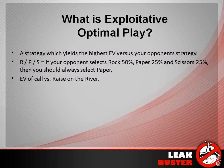Another simple example: you have an opponent that you know is always calling the flop and then always folding on the turn no matter what. In that case, you're double-barreling like 100% of your range all the time because you know this is happening. Of course, that's an extreme example that's never going to happen, but there will be opponents that call on the flop and fold on the turn too often. So you exploit that by not checking part of your range in this situation, because you have a higher exploitative EV by betting twice versus trying to balance your range more.